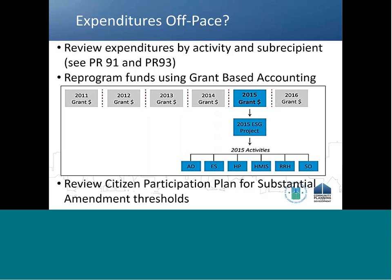If necessary, recipients should consider reprogramming funds to a different eligible activity or subrecipient. In either case, recipients must follow grant-based accounting principles by keeping reprogrammed funds under the same federal fiscal year project. For example, recipients may reprogram 2015 emergency shelter funds to their 2015 Street Outreach activity, but under no circumstances should those 2015 funds be reprogrammed to any activity set up under the 2016 project or any other year's project. Also be aware that if the reprogramming of funds triggers an amendment or substantial amendment to the consolidated plan or action plan, you must follow your local citizen participation plan.